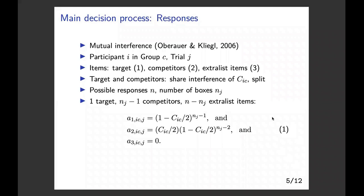We first introduce how we model responses. Our model is based on a mutual interference model from 2006. The mutual interference is a mechanism used to explain the working memory capacity limitations. It assumes that each pair of items stored in working memory interfere with each other, so that when there are more items stored, there will be more interference, thus leading to the working memory capacity limit.